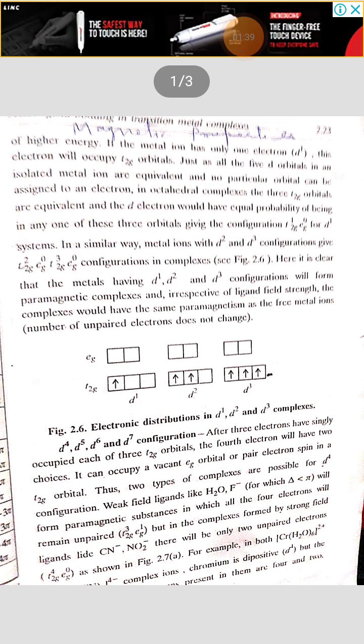D4, D5, D6 and D7 configuration. After the electron has singly occupied each of these T2G orbitals in D4 orbital,